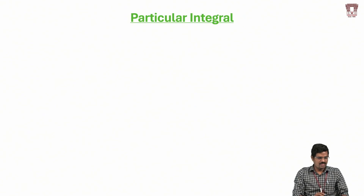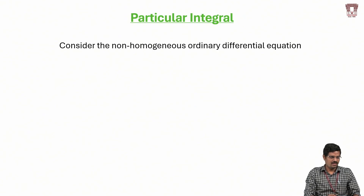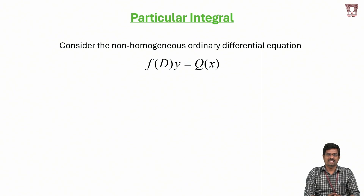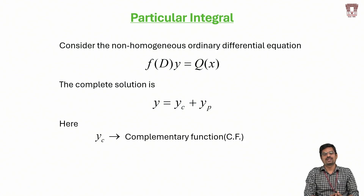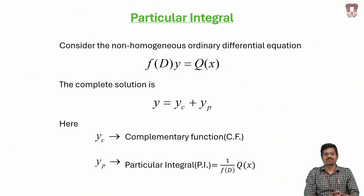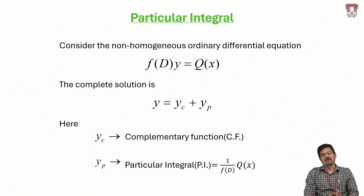We consider the non-homogeneous ordinary differential equation in the form f(D)·y = Q(x), where capital D represents differentiation with respect to x. Our main purpose is to solve this differential equation. The solution is generally known as the complete solution, which is divided into two parts: yc and yp. Here yc is the complementary function, also called the general solution, and yp is the particular integral or particular solution, given by yp = (1/f(D))·Q(x).